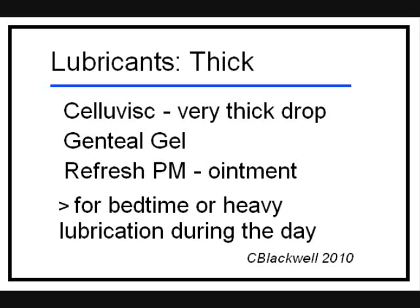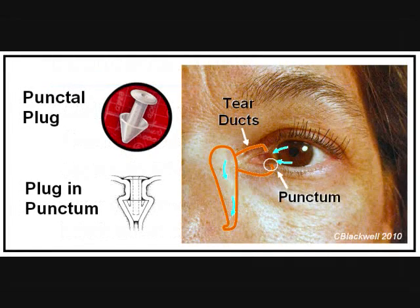For people with dry eye from reduced aqueous production where tears are not enough, there are more tools available. I will talk about two: punctal plugs and a drop called Restasis. The diagram shows how tears normally drain from the eye — the opening of the tear duct is called the punctum. We are able to insert a small, soft, silicone plug into the punctal opening to block the drainage duct. Usually we only put a plug in one of the two puncta. Blocking half the drain system helps retain more of your own tears. If there is any problem, it can be easily removed.